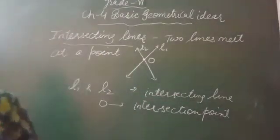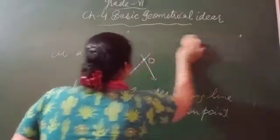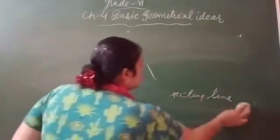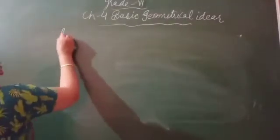Next is parallel lines. Parallel lines: when lines don't meet at any point. When two or more lines don't meet at any point, they are parallel lines.